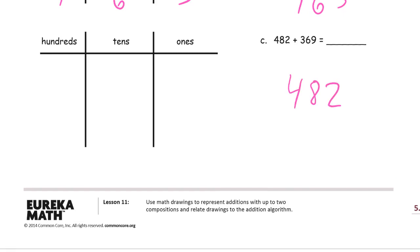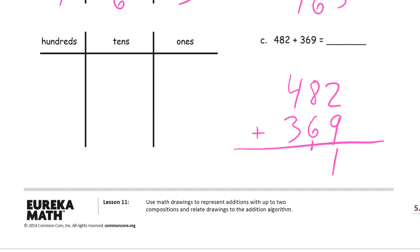482 plus 369. Starting with the ones digits again. 2 plus 9 is 11. That's composing a 10 with one left behind. 8 plus 6 is 14, and one more is 15 — that's 15 tens. So I'm going to have to compose a hundred and have five tens left behind. And then 4 plus 3 is 7, and one more is eight hundreds. And we'll draw the chips.